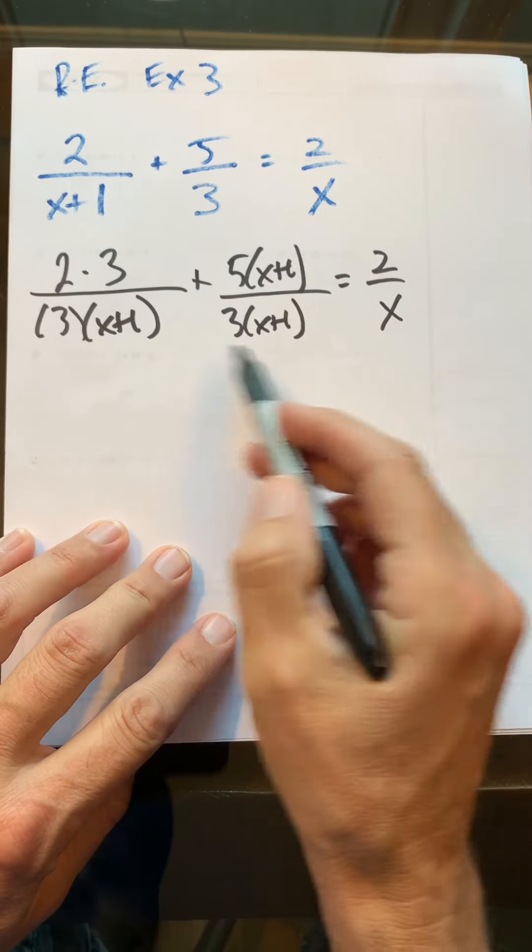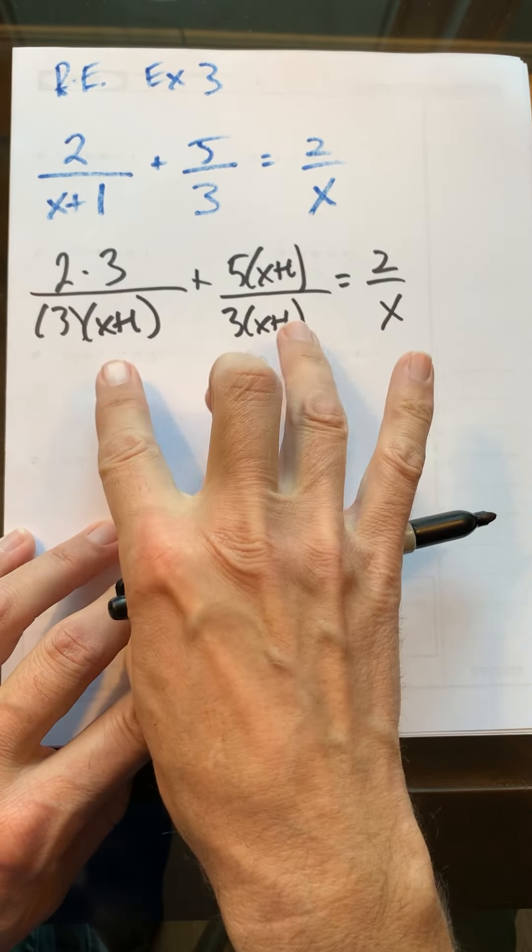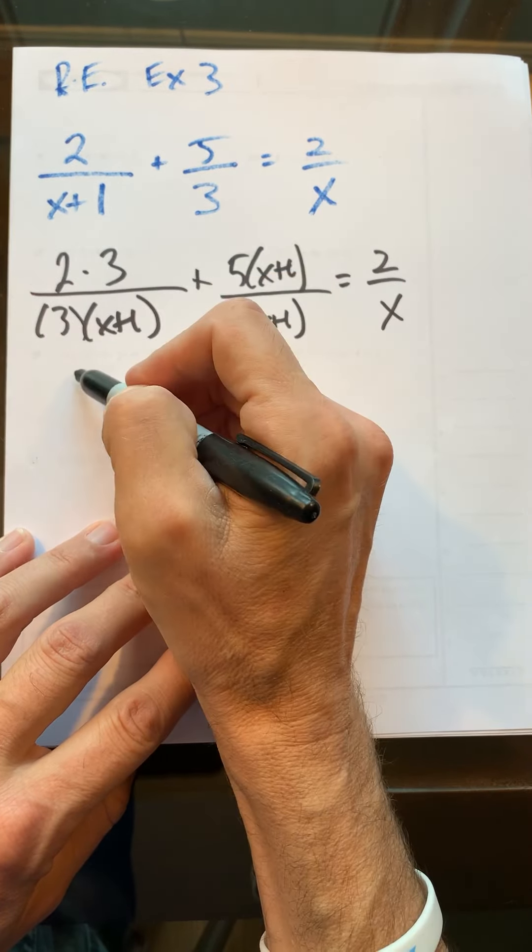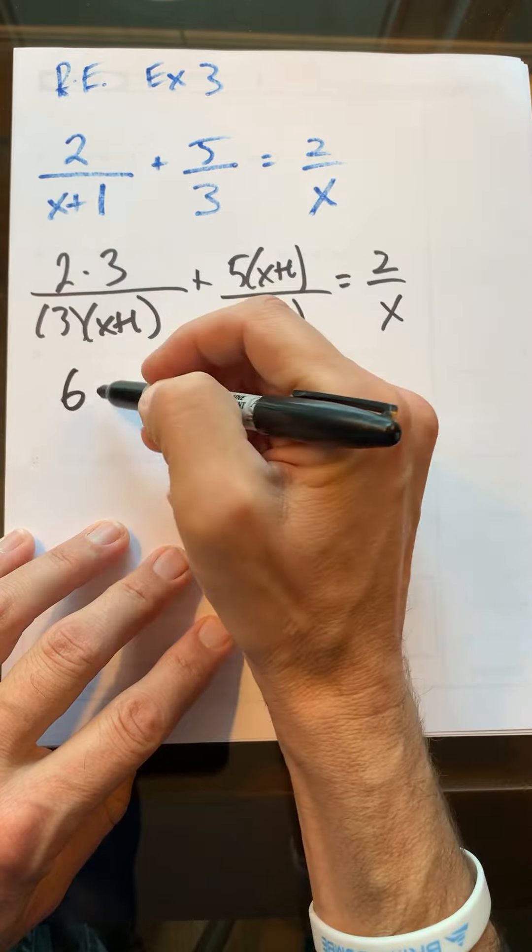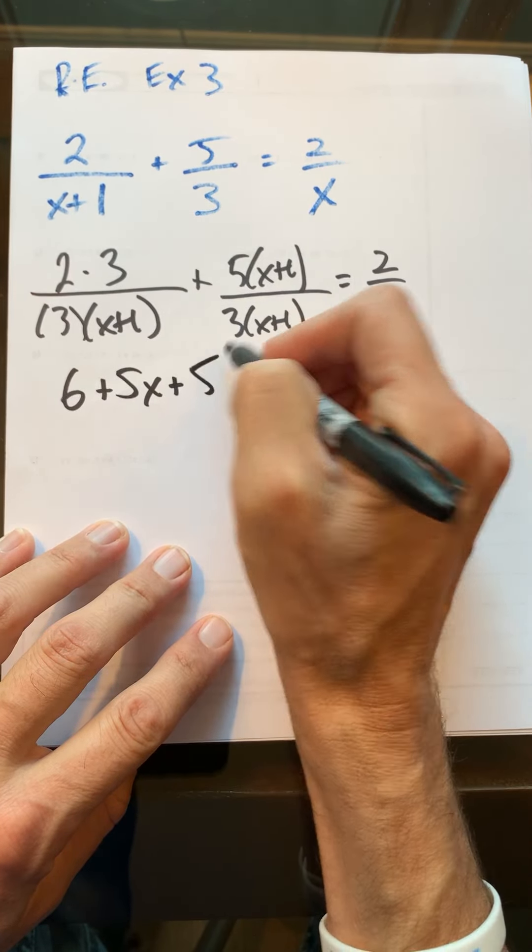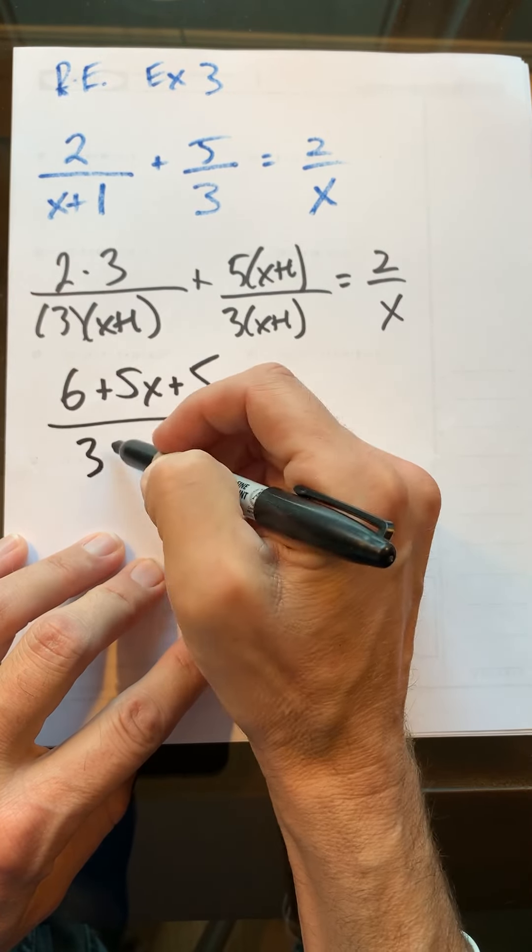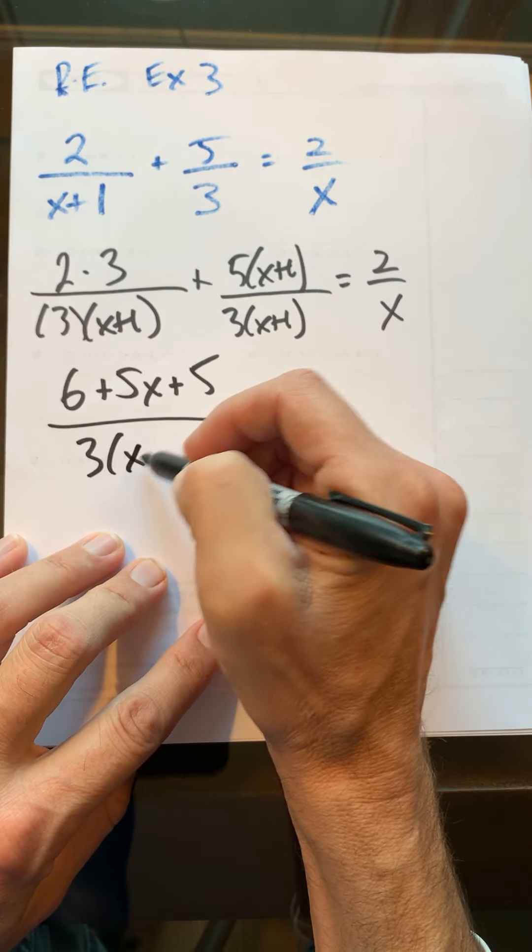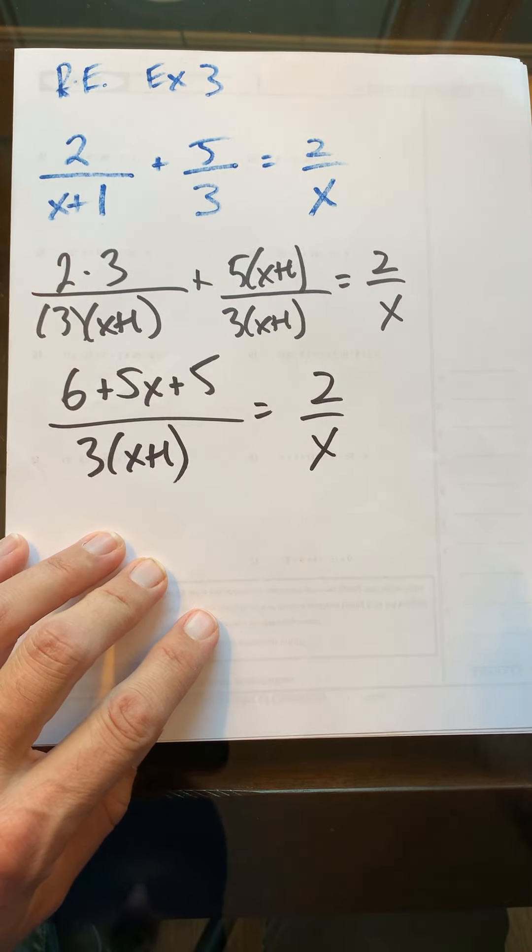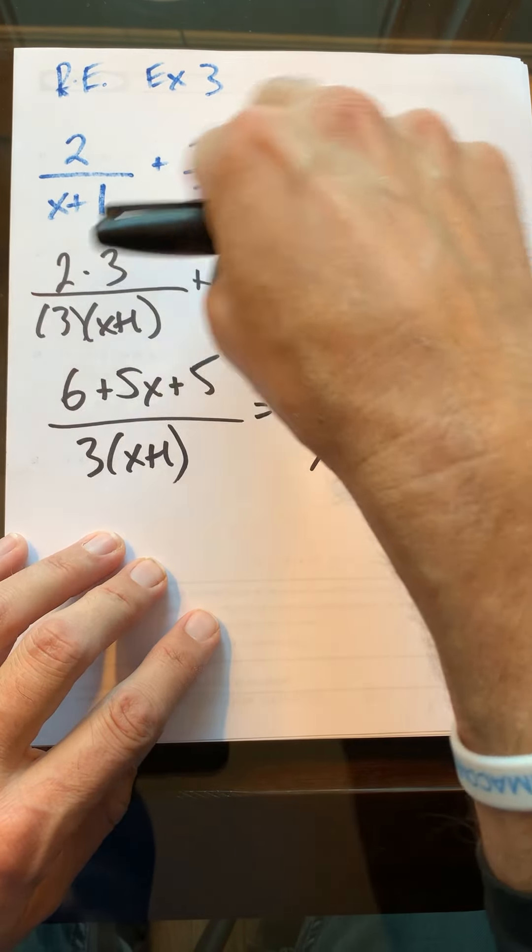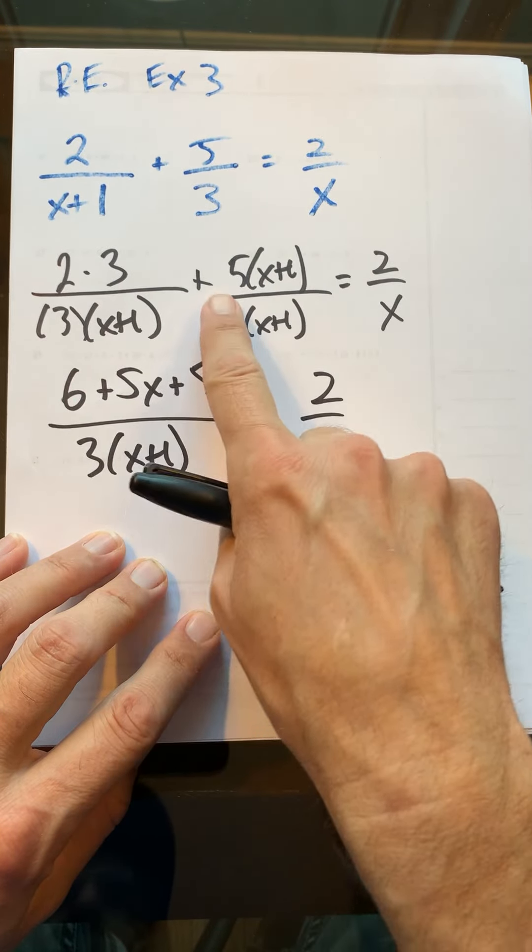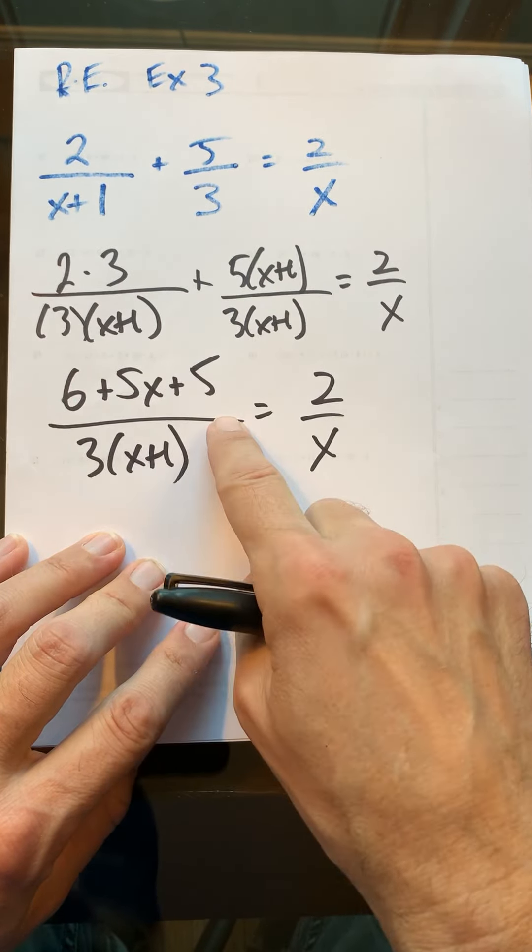So that's really just common denominator work. Now once I have this common denominator, which I do, I know I can put the numerators together. I know 2 times 3 is 6, 5 times x is 5x, and 5 times 1 is 5. I'm going to put those together over my denominator of 3(x+1) equals 2/x. So I just combined these two things using the distributive property, then added them together.